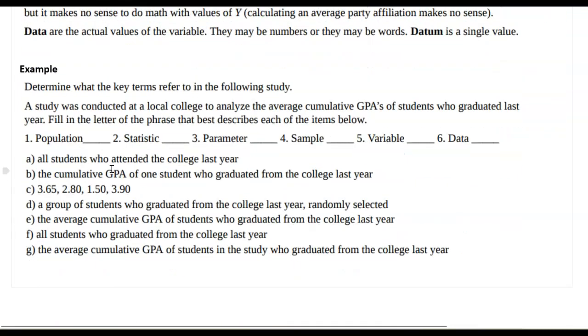All right, let's look at an example here. This is something that would be of interest to a college or university for sure. So there was a study conducted by a local college to analyze the average cumulative GPA of students who graduated last year. Let's see if we can use the vocab that we just learned to understand each piece here. Now A says all students who attended the college last year. I want us to be very careful because in the description here it said students who graduated. So I'm going to kind of put a pin in that A.